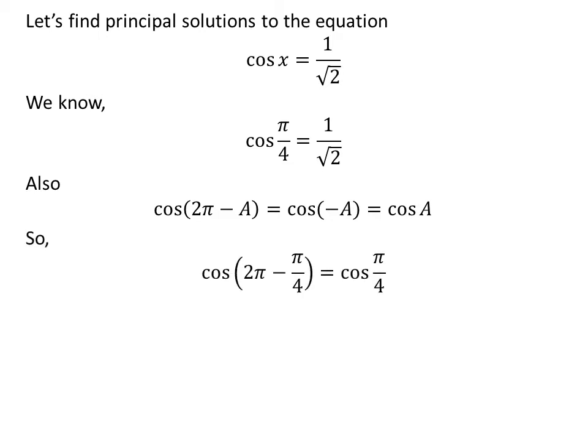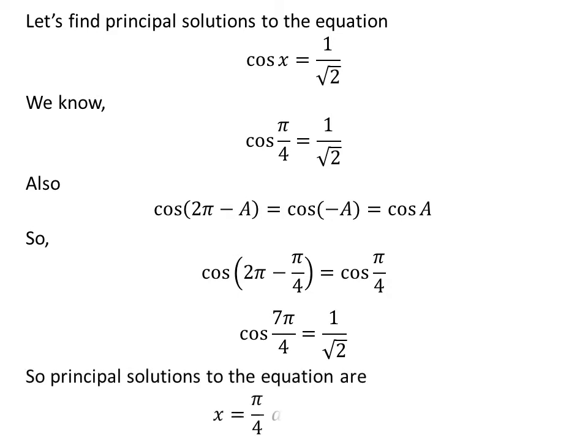Applying the above identity, cosine of 2 times pi minus pi upon 4 equals 1 upon square root of 2. Since 2 times pi minus pi upon 4 equals 7 times pi upon 4, we have cosine of 7 times pi upon 4 equal to 1 upon square root of 2. So the principal solutions to the equation cosine of x equals 1 upon square root of 2 are pi upon 4 and 7 times pi upon 4.